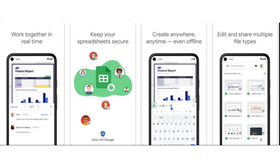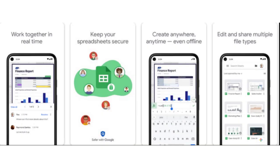Number 1: Google Sheets. Google Sheets is one of the best Excel alternatives on Android. You can work with your team members in real time on the same sheets. Not only that, but since most sheets are stored on the cloud, you can access them from anywhere.